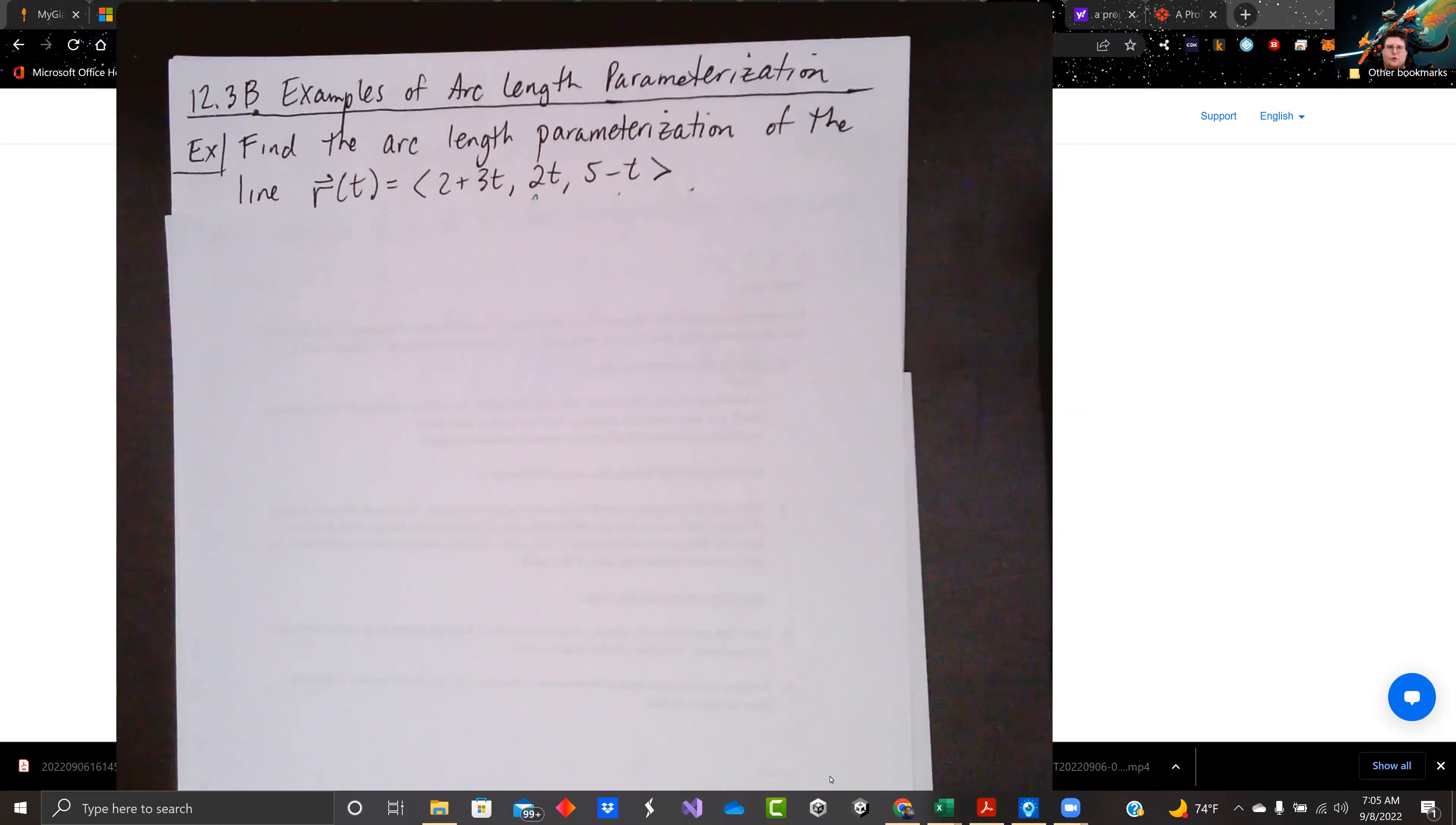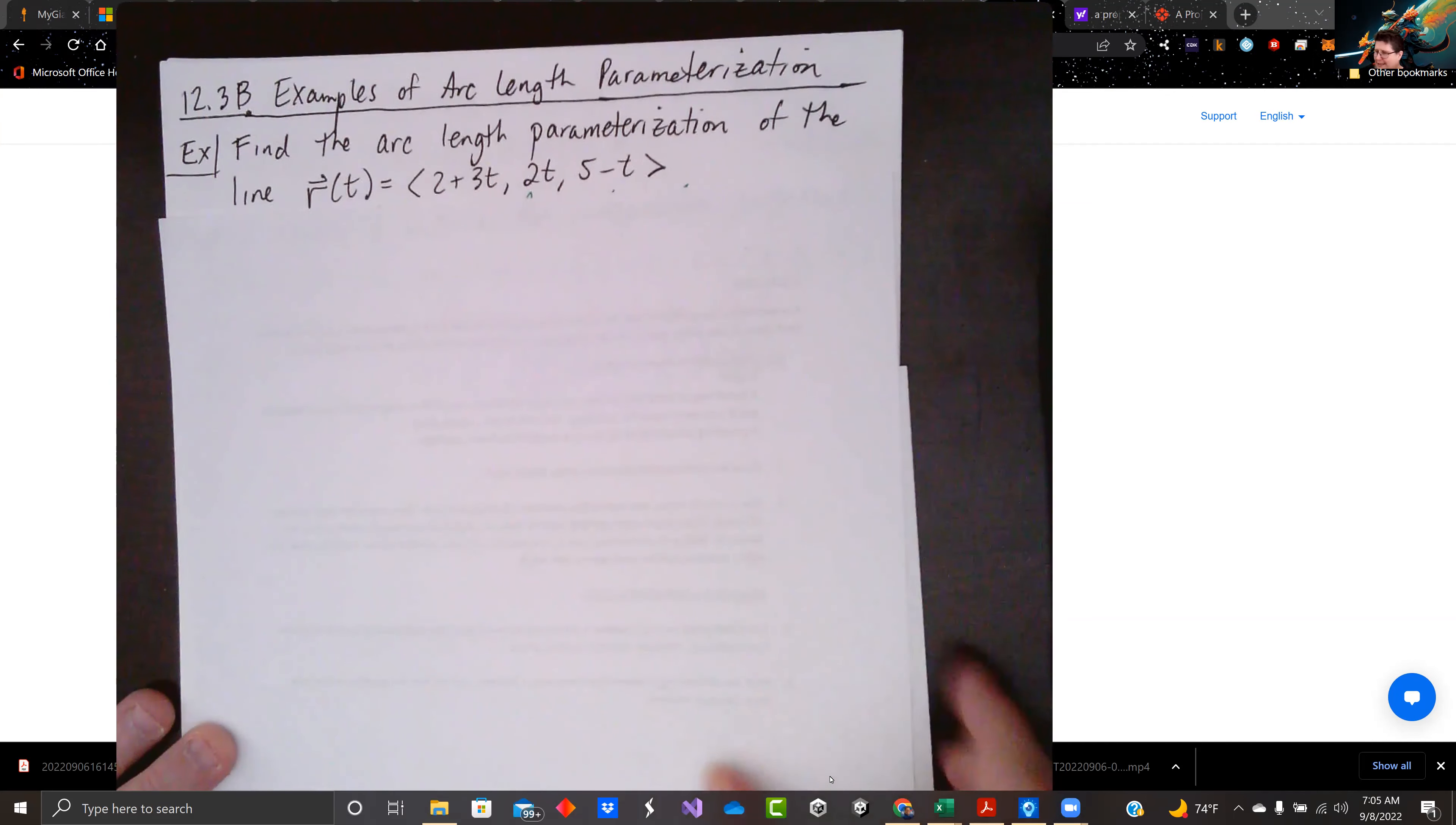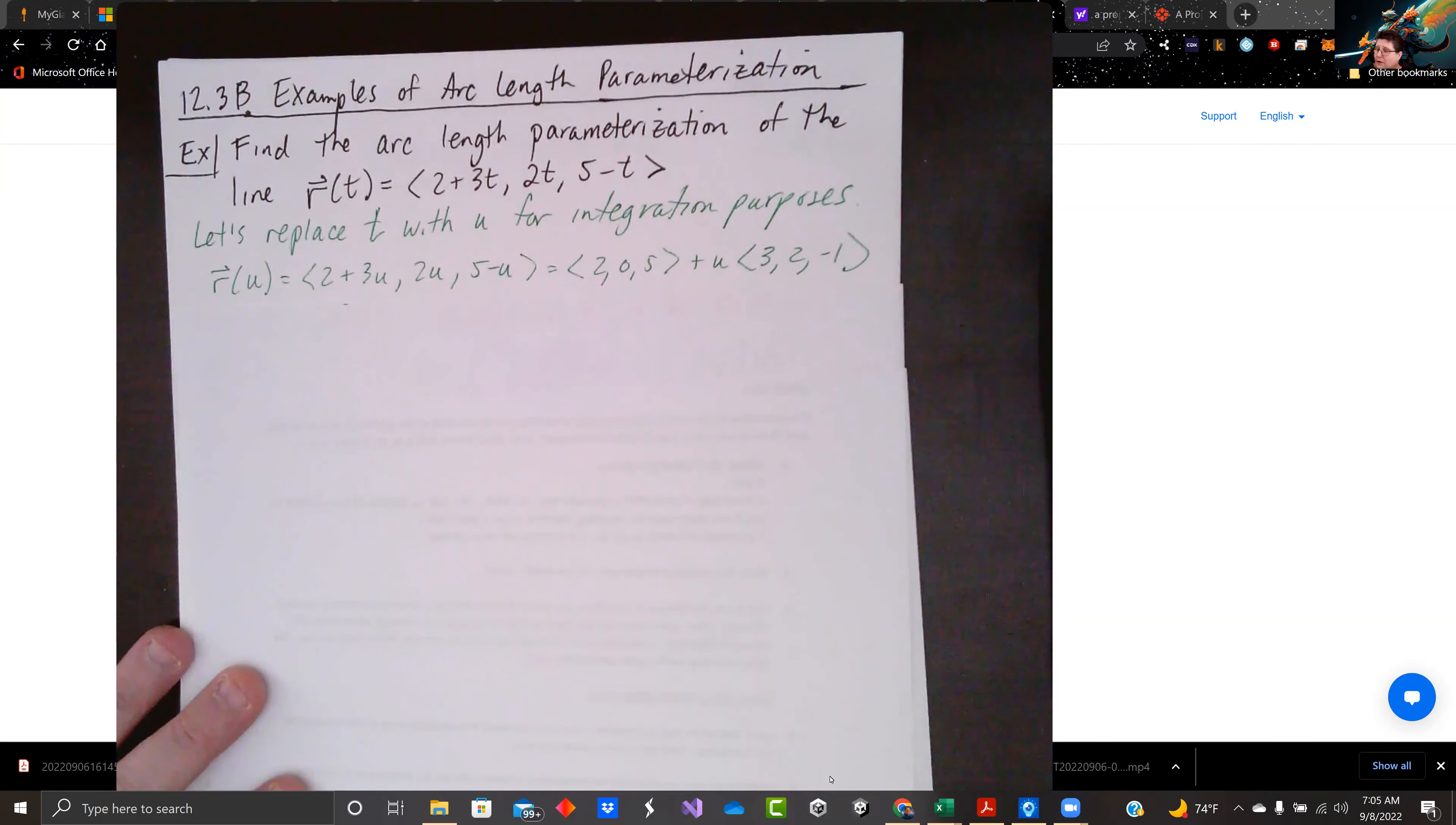Welcome back, everybody. Let's continue 12.3 with arc length parameterizations for vectors. Let's just jump right into it with an example. We're going to find the arc length parameterization of the line r(t) equals 2 plus 3t for the x component, 2t for the y component, and 5 minus t for the z component. So we want to use the integral formula for arc length, and we want to use t as something in the output. So we're going to use u as a dummy variable for now. I just replaced r(t) with r(u). And so that's what our vector looks like.